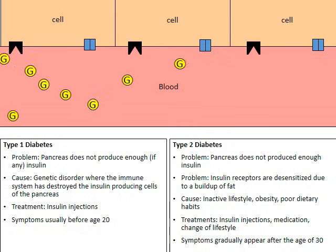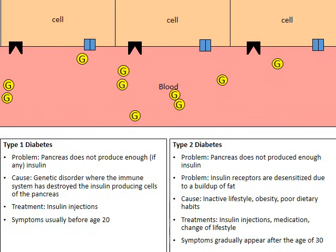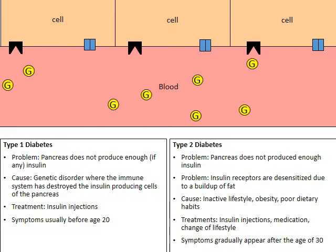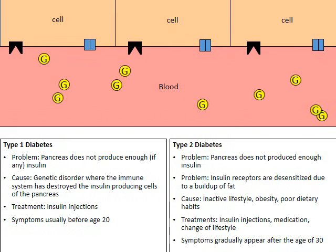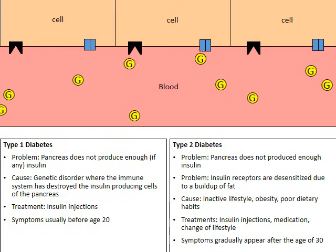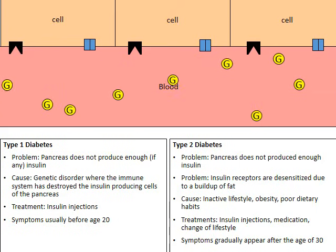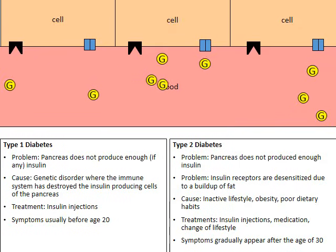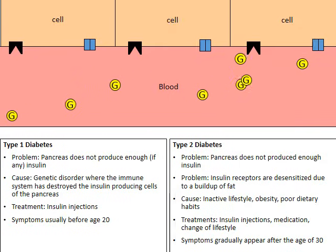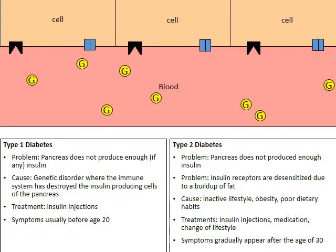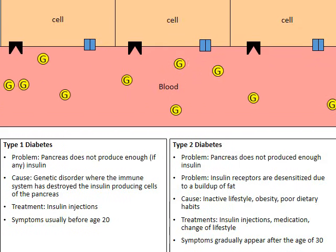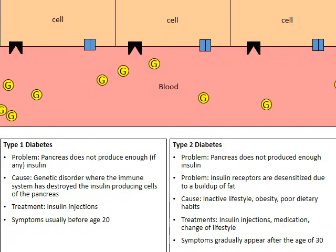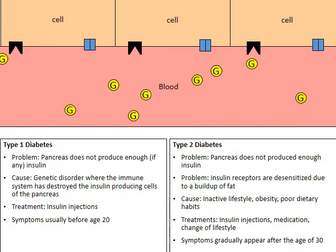So there you go. Here is a side-by-side comparison of type 1 and type 2 diabetes. Keep in mind both types of diabetes are due to an extra amount of blood glucose in the bloodstream and the person's inability to control that glucose level naturally. I hope you found this helpful — please place your thoughts in the comments below.